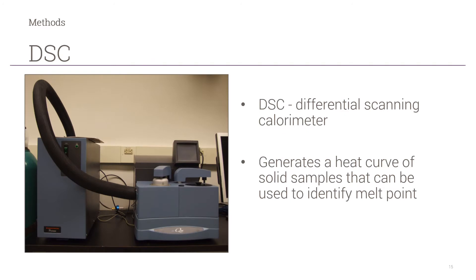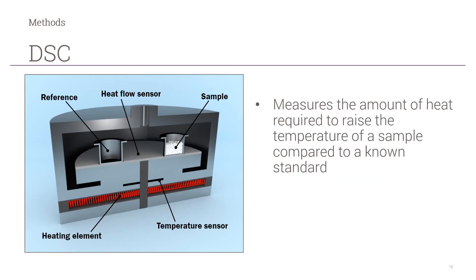The first piece of equipment used to analyze the samples was DSC, or differential scanning calorimeter. Basically, it generates a heat curve of solid samples that can be used to identify the melt point of a material. DSC works by measuring the amount of heat needed to raise the temperature of a sample compared to a known standard.